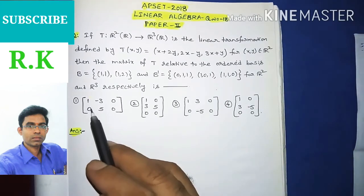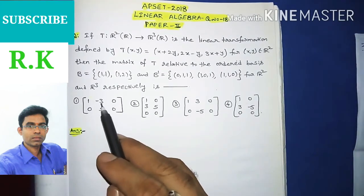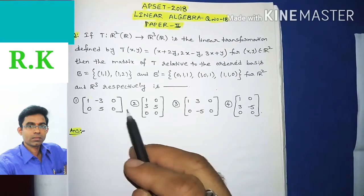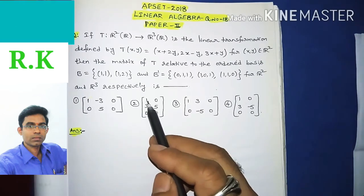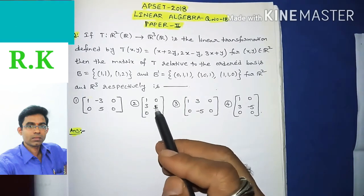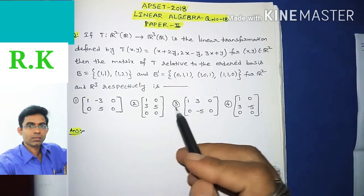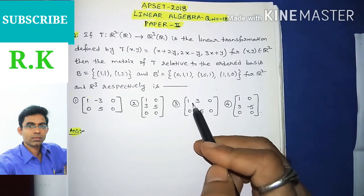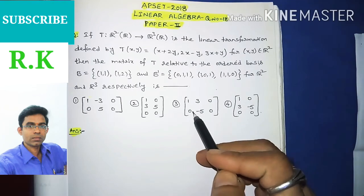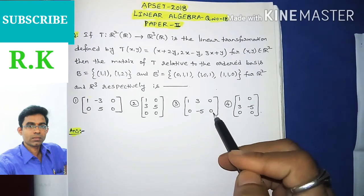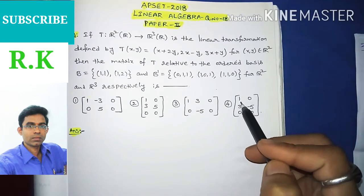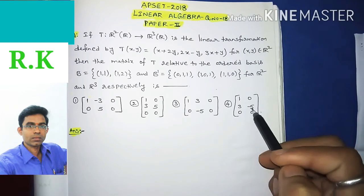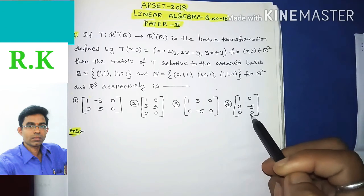The four options are: option 1 — matrix [1, −3; 0, 0; 5, 0], option 2 — matrix [1, 0; 3, 5; 0, 0], option 3 — matrix [1, 3; 0, 0; −5, 0], and option 4 — matrix [1, 0; 3, −5; 0, 0].